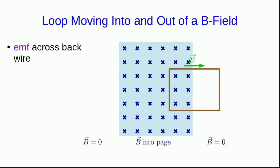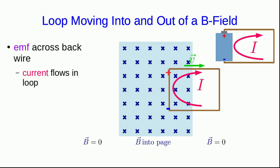And now later, the loop is exiting the region of the field. There's no EMF across the front, but there is an EMF across the back wire. And so it's like this situation with a battery, and once again, current will flow in the loop, but now it's going clockwise.